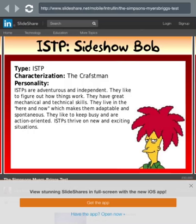Sideshow Bob — ISTP, the craftsman. ISTPs are adventurous and independent. They like to figure out how things work and have great mechanical and technical skills. They live in the here and now, which makes them adaptable and spontaneous. They like to keep busy and are action-oriented. ISTPs thrive on new, exciting situations. Yep, that fits Sideshow Bob.